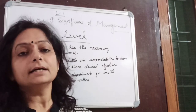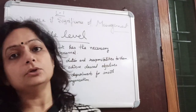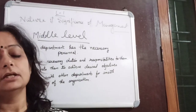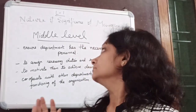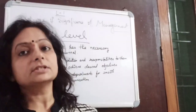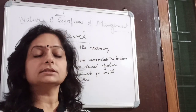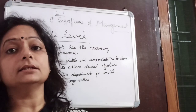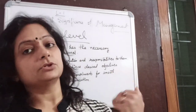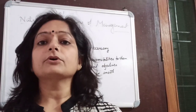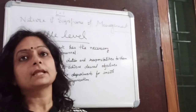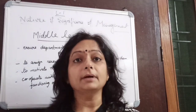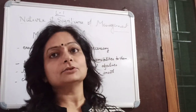Middle level managers are the link between the top and lower level managers. They are usually divisional heads or heads of different departments. They have responsibilities towards both upper and lower level managers. On one hand, they are responsible for implementing the plans and strategies set by top management, and on the other hand, they oversee all activities of lower level managers. They must understand the plans and policies adopted by top management and communicate these to lower level managers.